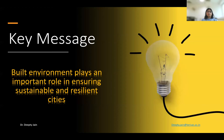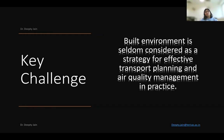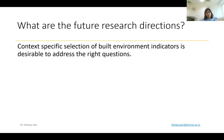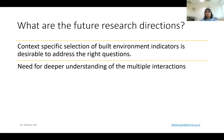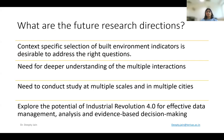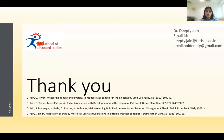The key message is that built environment plays an important role in ensuring sustainable and resilient cities, but is seldom identified as a strategy by cities for effective transport planning or air quality management — highlighting a gap between academia and policy development. Future research directions include context-specific selection of built environment indicators, deeper understanding of multiple interactions, studies at multiple scales and cities, and identifying the potential of industrial revolution tools for effective data management, analysis, and evidence-based decision making.